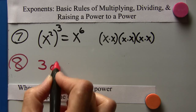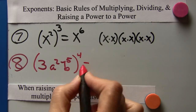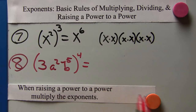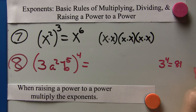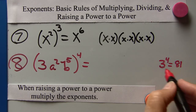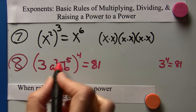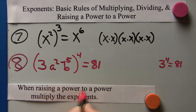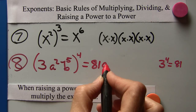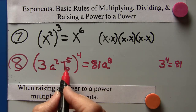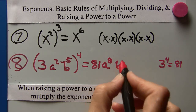Example 8: 3a squared b to the fifth, quantity raised to the fourth. First, 3 to the fourth is 81. For a squared raised to the fourth — raising a power to a power — multiply the exponents: 2 times 4 is 8, giving us a to the eighth. For b to the fifth raised to the fourth, multiply the exponents: 5 times 4 is 20, giving us b to the twentieth. The answer is 81a to the eighth b to the twentieth.